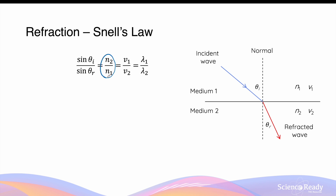The refractive index of the medium is the number that describes to what extent the medium causes the light wave to refract. The greater the index — that is the higher the number — the greater the degree of refraction, so the wave will be bent more. Snell's law also states that this ratio between the angles and the refractive indices is also equal to the velocity of the wave in the first medium to the second medium, as well as the wavelength in the first medium divided by that in the second medium.